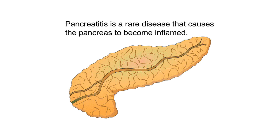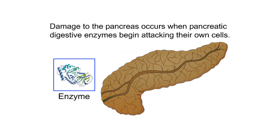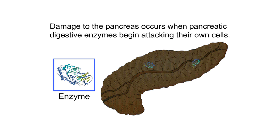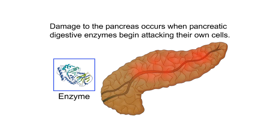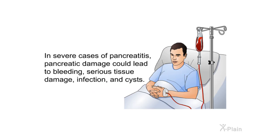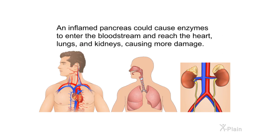Pancreatitis is a rare disease that causes the pancreas to become inflamed. Damage to the pancreas occurs when pancreatic digestive enzymes begin attacking their own cells. In severe cases, pancreatic damage could lead to bleeding, serious tissue damage, infection, and cysts. An inflamed pancreas could cause enzymes to enter the bloodstream and reach the heart, lungs, and kidneys, causing more damage.